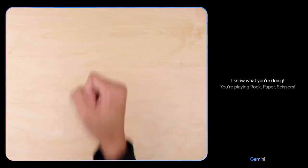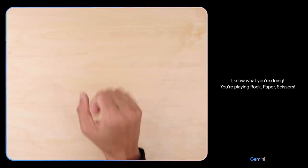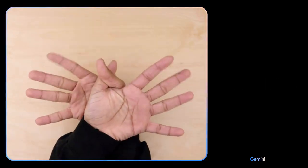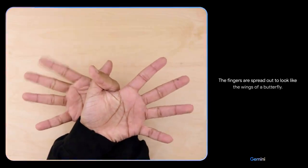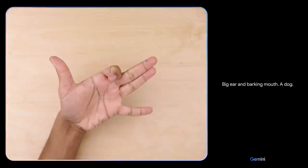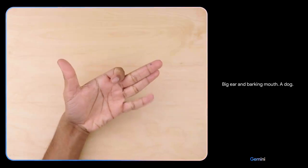I know what you're doing. You're playing rock, paper, scissors. What do you see now? The fingers are spread out to look like the wings of a butterfly. What's this? Big ear and barking mouth. A dog. Sweet.